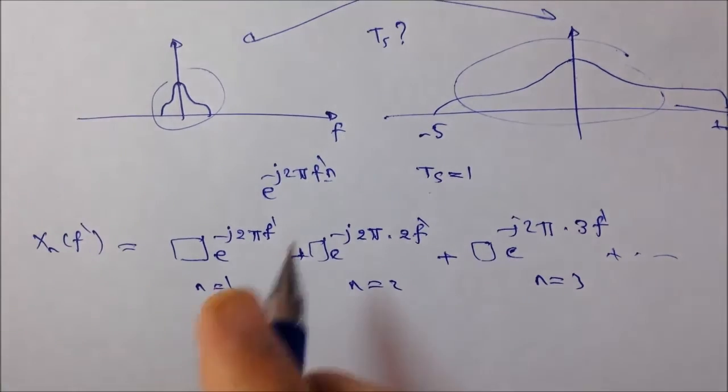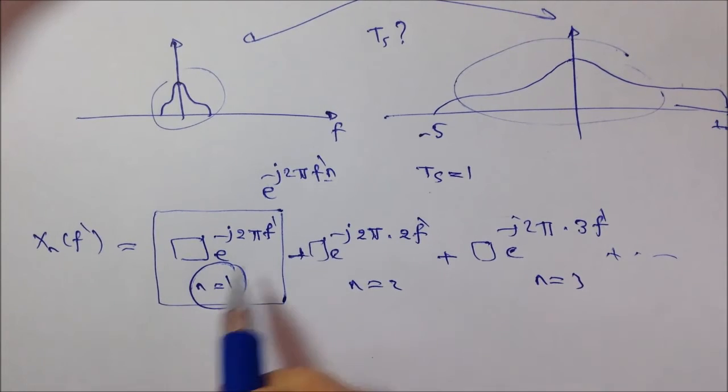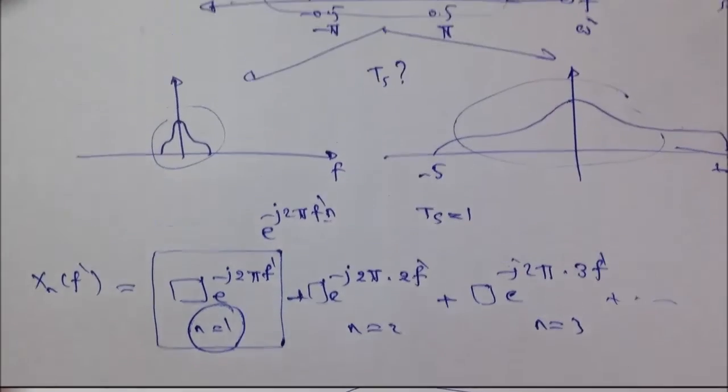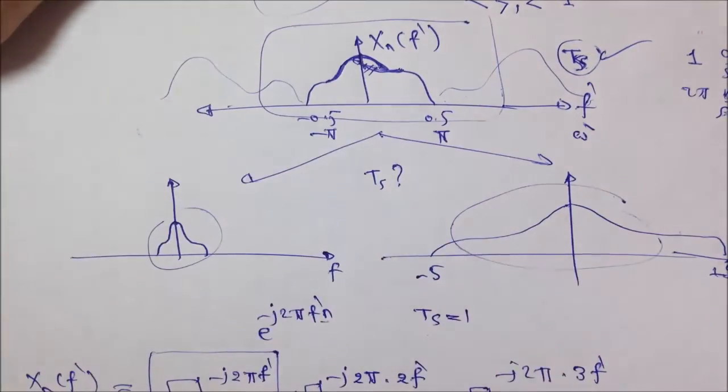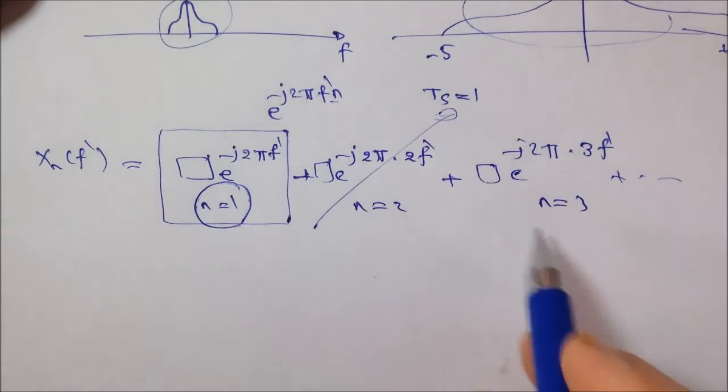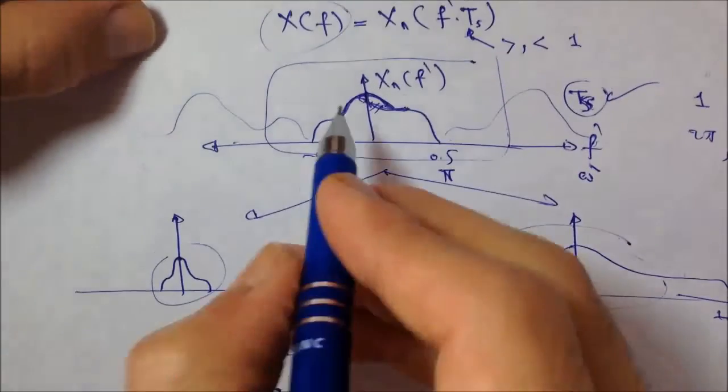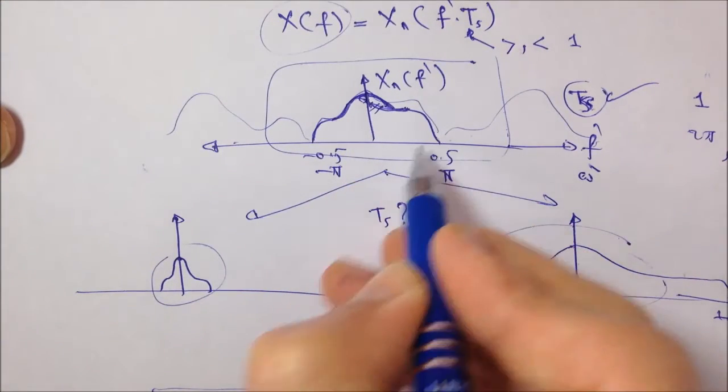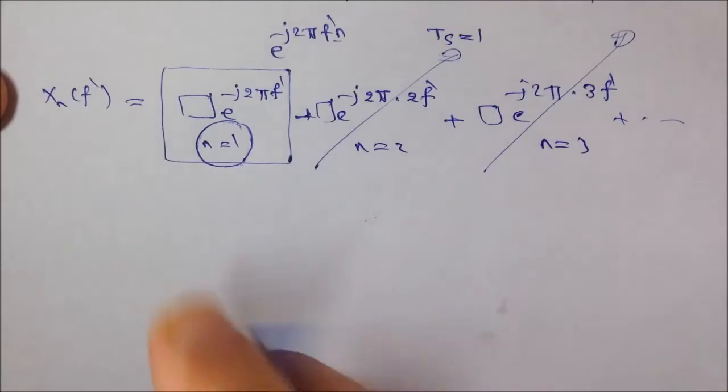So, this fundamental term, when n equal to 1, this one is going to determine at which rate this spectrum is going to repeat itself. Now, the other terms, they don't really affect this value, but they help to determine the shape of this final pattern. But this duration is determined by this fundamental term, when n equal to 1. This is a basic concept that we've learned from the Fourier series.